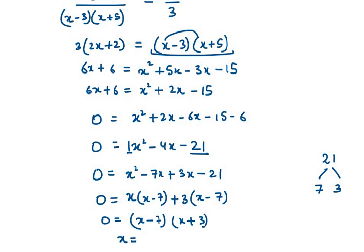From this, X equals 7 or X equals minus 3. Since we are talking about age, we can never have a negative age — no one is minus 3 years old. Therefore we have only one solution: X equals 7. So the present age of Raman will be 7 years. This is your result for question number 4. Thank you for watching this video.